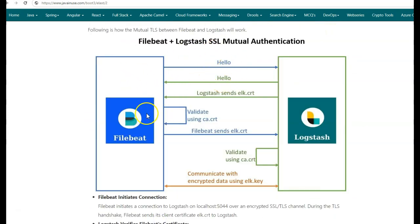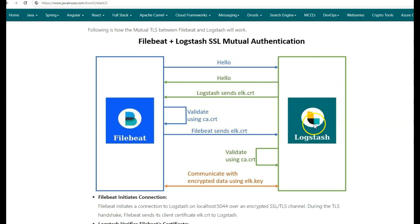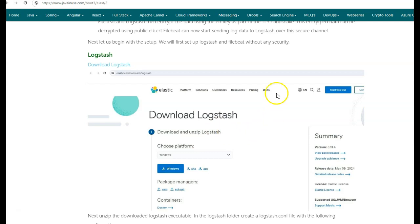Let us have a look at how mutual TLS between Filebeat and Logstash works. Filebeat first sends hello to Logstash. Logstash then replies with a hello, and also sends its public certificate, ELK.CRT, to Filebeat. Filebeat then verifies the sent ELK.CRT using the CA.CRT certificate. Once validated, it means that Logstash has authenticated itself to Filebeat and Filebeat can trust Logstash. Next, Filebeat sends its own ELK.CRT file to Logstash. Logstash then validates this ELK certificate using CA.CRT. Once validated, Filebeat has authenticated itself to Logstash and Logstash can trust Filebeat. Once this trust has been established, Filebeat and Logstash communicate with each other with encrypted data using ELK.Key.